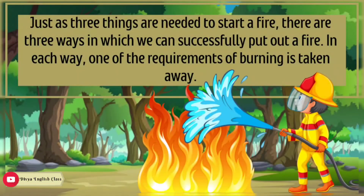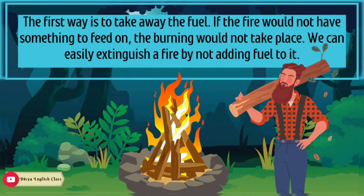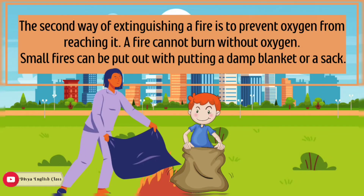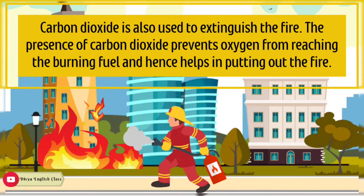Just as three things are needed to start a fire, there are three ways in which we can successfully put out a fire. In each way, one of the requirements of burning is taken away. The first way is to take away the fuel — if the fire does not have something to feed on, burning will not take place. We can easily extinguish a fire by not adding more fuel to it. The second way is to prevent oxygen from reaching the fire. A fire cannot burn without oxygen. Small fires can be put out by placing a damp blanket or a sack over them. Carbon dioxide is also used to extinguish fire, as its presence prevents oxygen from reaching the burning fuel.